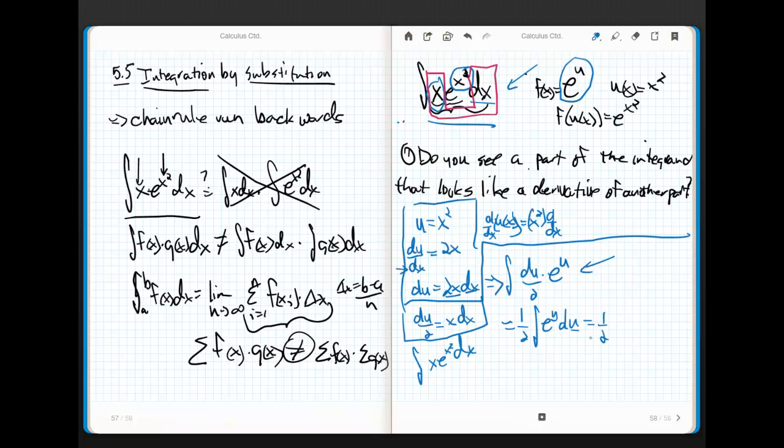I end up with 1 half. What's the antiderivative of e to the u? Notice this variable and this variable match up. Life is good. I end up with 1 half e to the u. The antiderivative of e to the u is e to the u, and plus c.